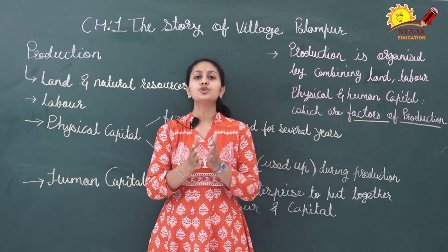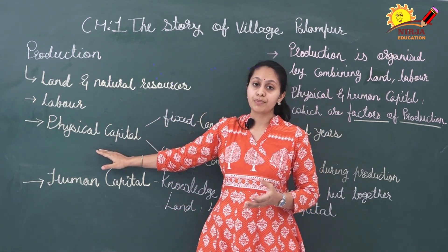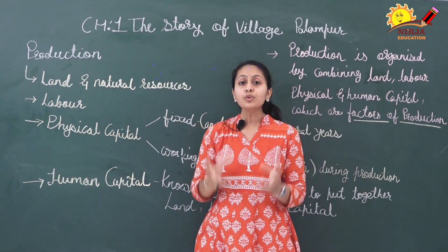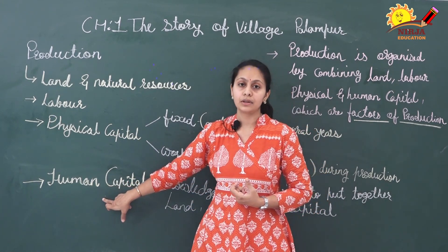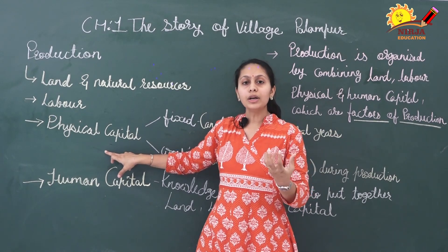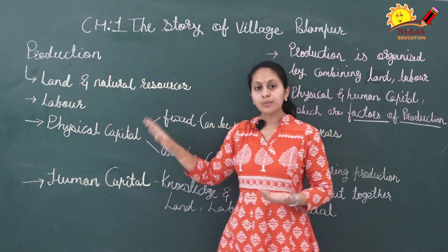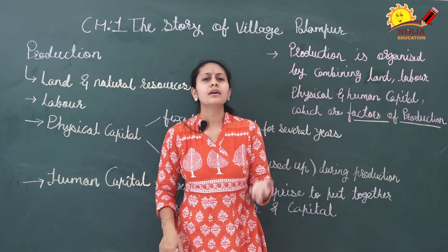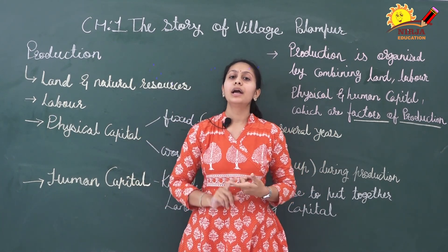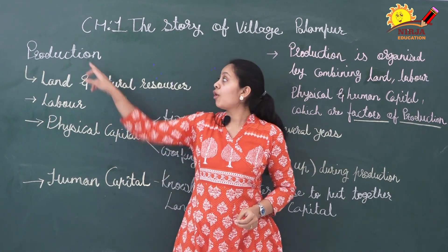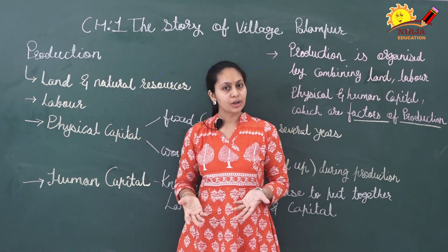After land, labour, and physical capital, the fourth factor is human capital — the knowledge and enterprise required to put together all three of them. It is the knowledge of how to use all these resources together to carry out production. Even if you have all the other things, without that knowledge and those skills the final production output is not possible. So human capital is the fourth factor required for production. The definition to remember is: production is organized by combining land, labour, physical capital, and human capital — and all four are known as factors of production.